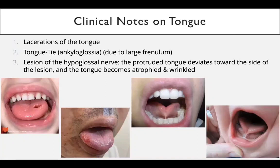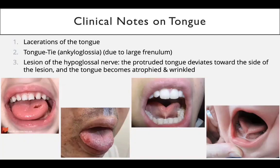A student answers: the hypoglossal nerve supplies the extrinsic muscles of the tongue except palatoglossus. The specific muscles named are palatoglossus, hyoglossus, and genioglossus — these are the extrinsic muscles supplied by the hypoglossal nerve.